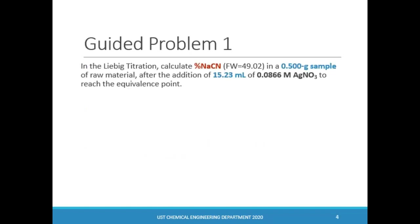Let us solve this problem involving a Liebig titration. Calculate the percent sodium cyanide in a 0.5-gram sample of raw material after the addition of 15.23 mL of 0.0866 molar silver nitrate to reach the equivalence point. The important thing to do first is to define the givens and, if doing molar-based calculations, establish the balanced chemical equation. Since it is a Liebig titration, you must know that it involves the reaction of silver and cyanide to form the silver-cyanide complex.